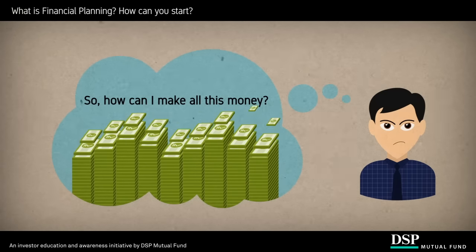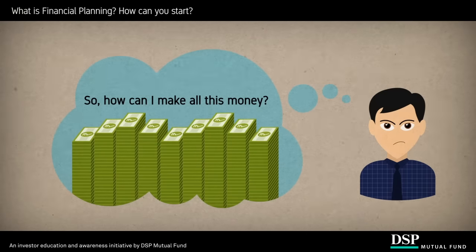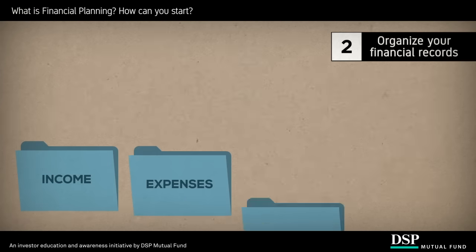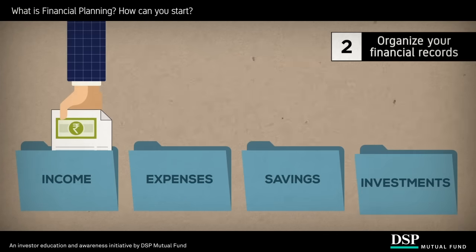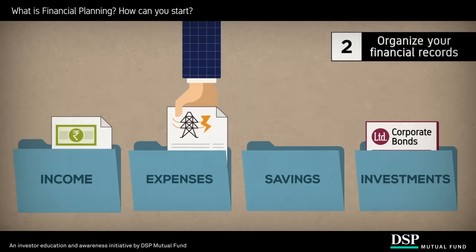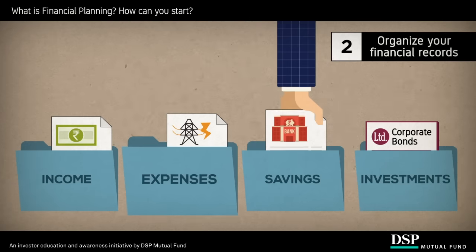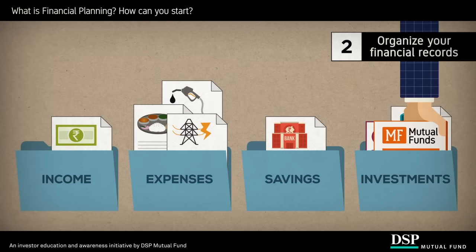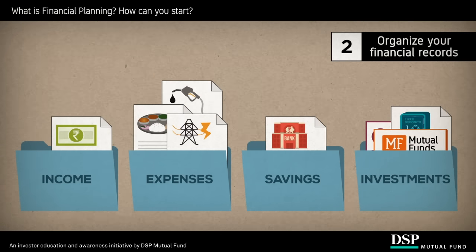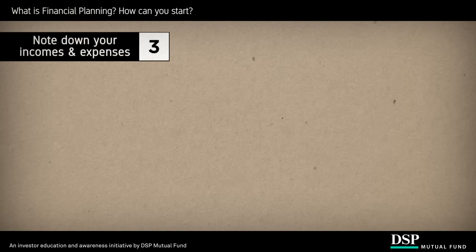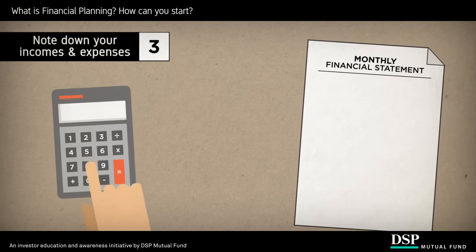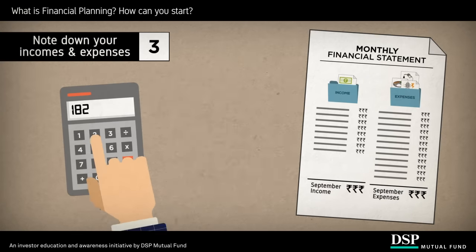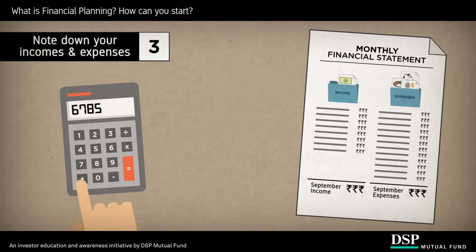Now that you have identified and prioritized your goals, let us start building your financial plan to fulfill them. Begin by organizing your financial records — file and categorize your financial records, identify all your income and expenses, your savings, and any investments that you may have already made.